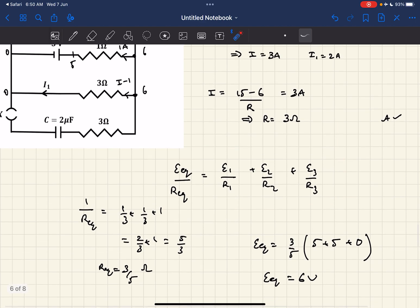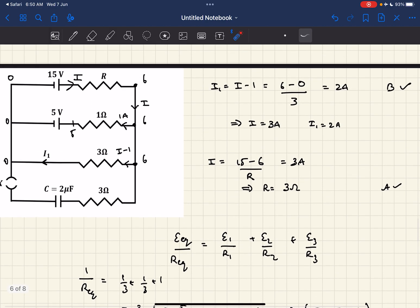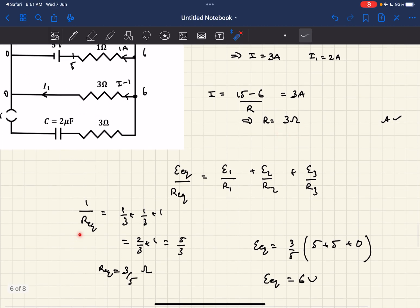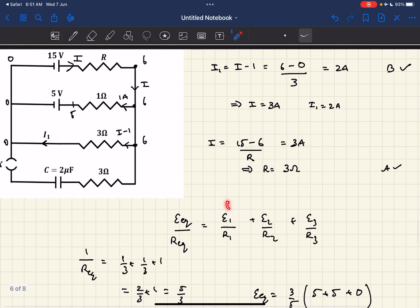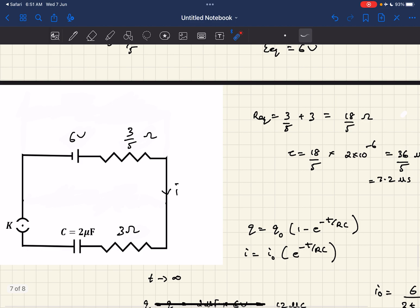This is the formula: E equivalent over R equivalent equals E1 over R1 plus E2 over R2 plus E3 over R3. R equivalent can be calculated since R, 1 ohm, and 3 are in parallel, giving R equivalent as 3 by 5 ohms. Substituting the values, we get E equivalent as 6 volt. The top three branches reduce to one battery and one resistor.